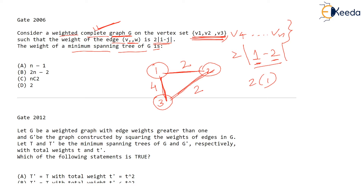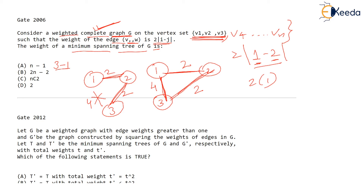They ask: what is the weight of the minimum spanning tree of G? For the three-vertex graph, the MST will contain edges one to two and two to three — it will not contain one to three as that weight is larger. So the cost of this minimum spanning tree is 4. Let's see which option fits: n minus one is 2, which doesn't fit. Option 2n minus 2 is 2 times 3 minus 2 equals 4 — this fits. Option nc2, that is 3c2, is 3 — this does not fit.